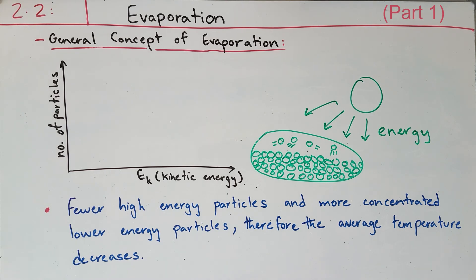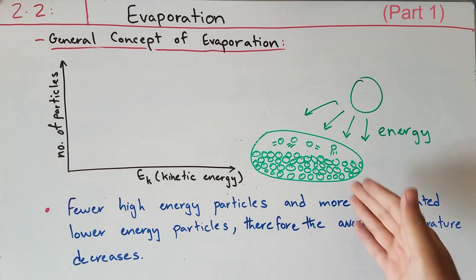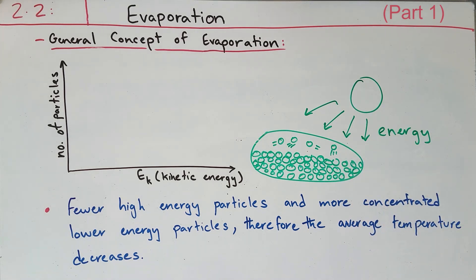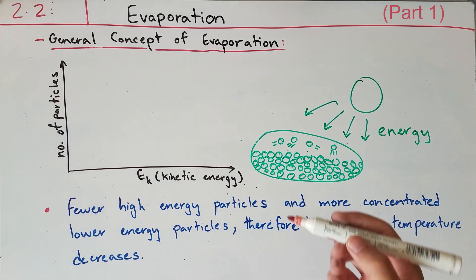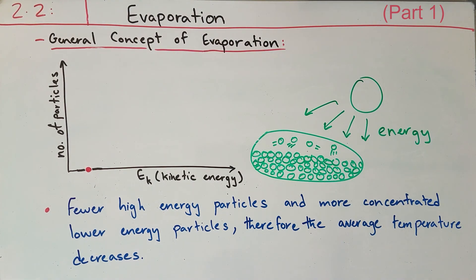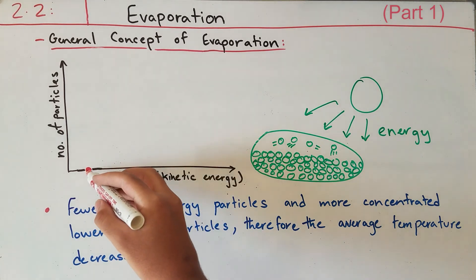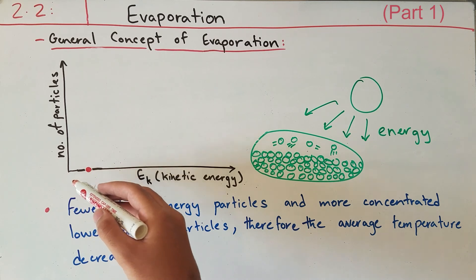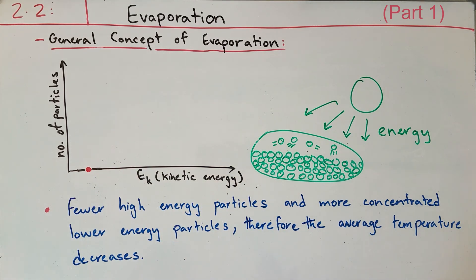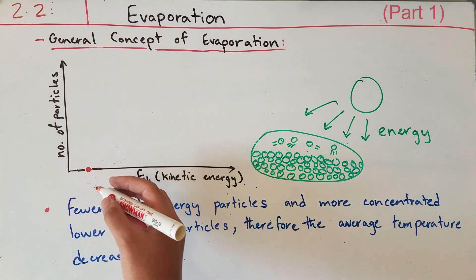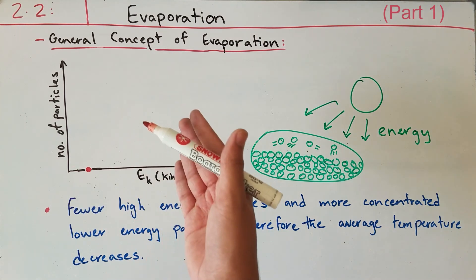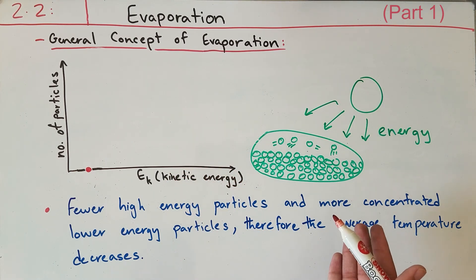Now that we understand the cooling effect of evaporation, let's make a graph of how the number of particles varies with the kinetic energy of these particles before and after evaporation. When making this graph, we will represent the before-evaporation curve with the red marker. Our red curve will start away from the origin because there is always some kinetic energy in the particles no matter how low the average temperature is. As we increase the kinetic energy, the number of particles will also increase, because more particles will have greater kinetic energy in the beginning.